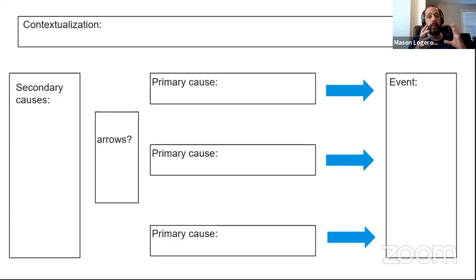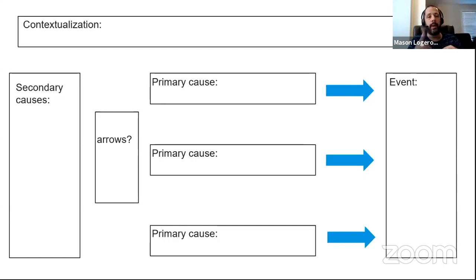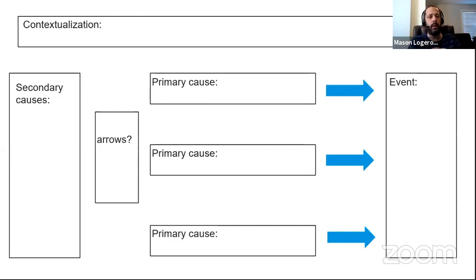I made a chart that can help you with causes of a major historical event and turned it into a PDF in the Google Drive we use for these videos. There's a link right below me in the information section — you might need to click 'see more' to find it. Go ahead and pause the video now, download this PDF, and print off a couple of copies if you can because we're going to be writing on them.